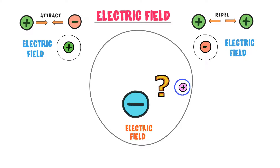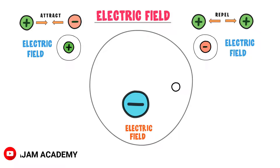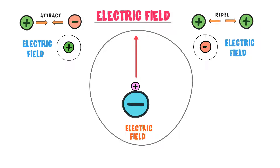The negative charge, being large in magnitude, will attract this point charge towards itself. Now listen carefully — I want to lift this point charge up in this electric field, just as I did in the gravitational field. To do that, I need to do some sort of work on this point charge to move it to a higher position in the electric field.